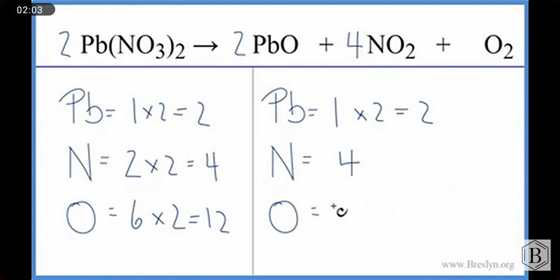I have two times one, that's two. Plus four times two, that's eight. Plus the two here. And two plus eight is ten, plus two is twelve. And this equation is now balanced.